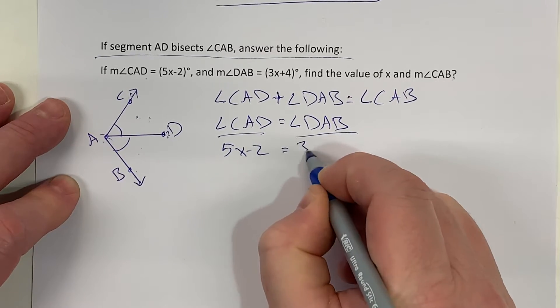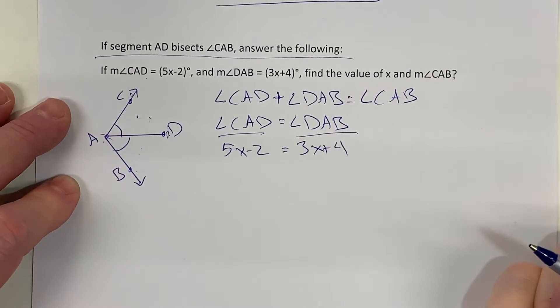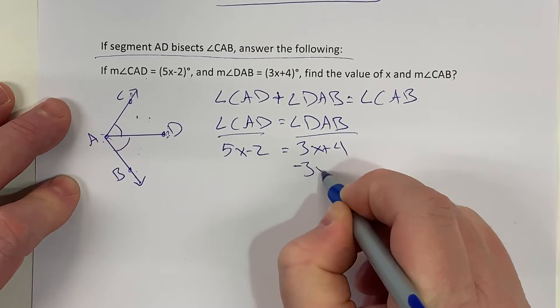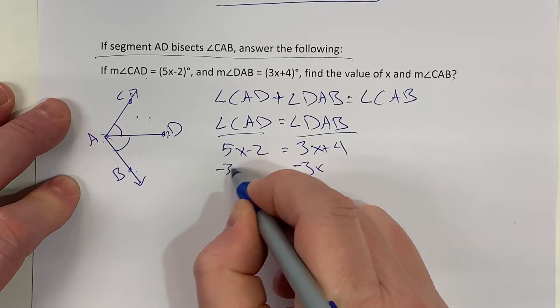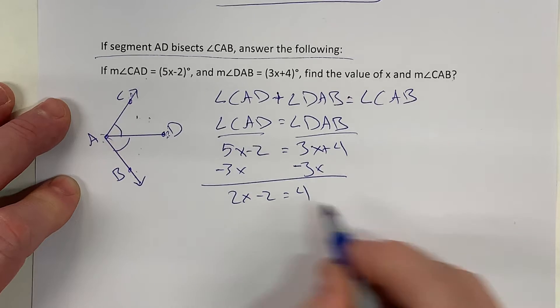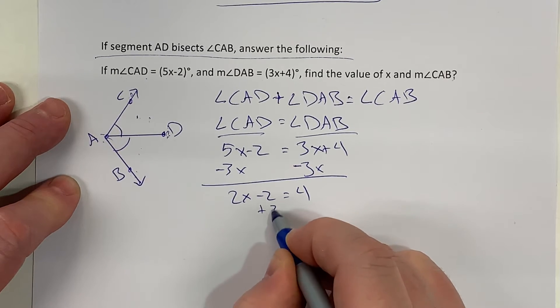Now we need to solve that equation. First I'll go ahead and I'll move my variables to one side. 2x - 2 equals 4.